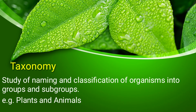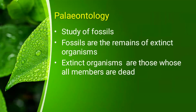We need to classify our organisms into different groups and subgroups. Classification and naming together make up taxonomy. The next branch is palaeontology, which is the study of fossils. For example, dinosaurs are organisms that have gone extinct. Their remains are what we call fossils, and studying them is called palaeontology. Extinct organisms are those whose all members are dead.